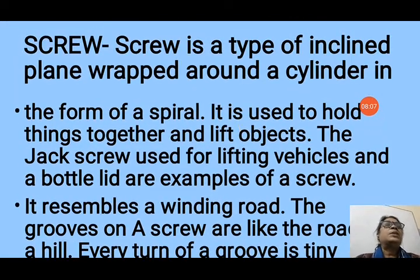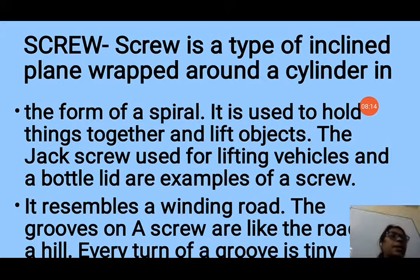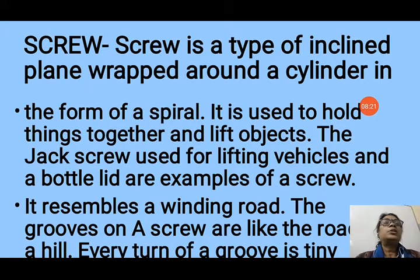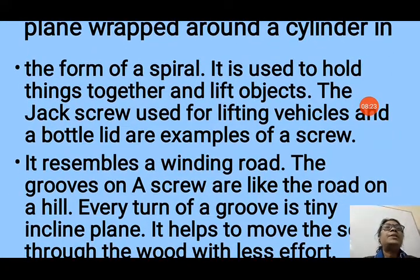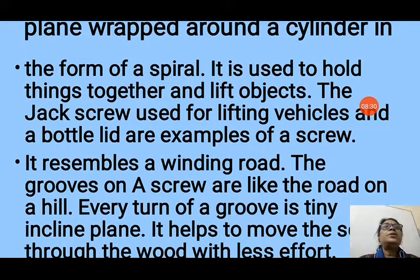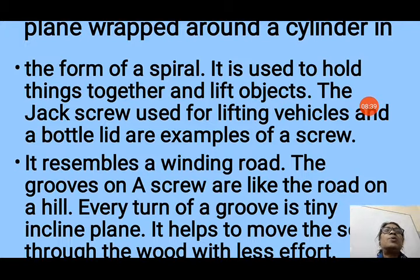Another simple machine is the screw. A screw is also a type of inclined plane wrapped around a cylinder in the form of a spiral. It is used to hold things together and to lift objects. The jackscrew, used for lifting vehicles when changing a tire, and a bottle lid are examples of a screw.